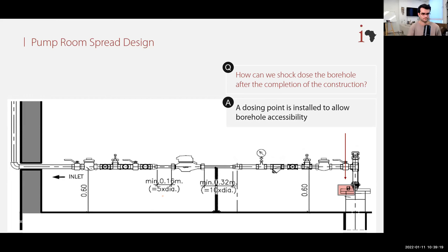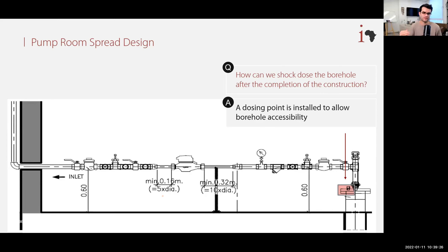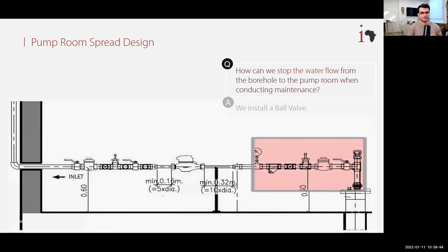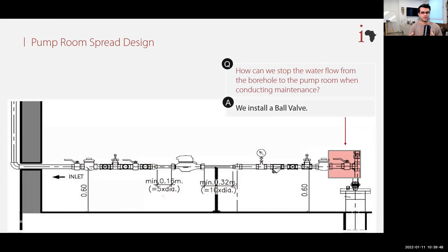The first thing in the pump room is the flange with the dosing point. Wouldn't it be much easier to do maintenance in a dry and controlled environment? So we install a ball valve. We want to isolate the pump room and stop the water flow from the borehole. By turning the ball valve handle, we can control the flow from the borehole to the pump room and work in a sterilized environment.